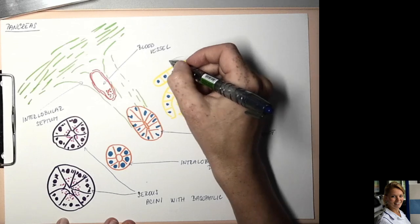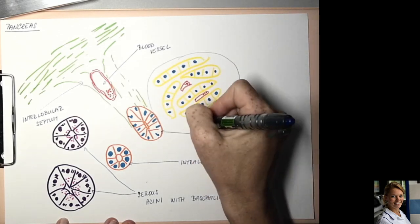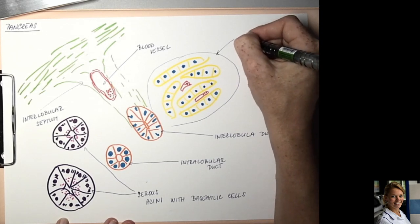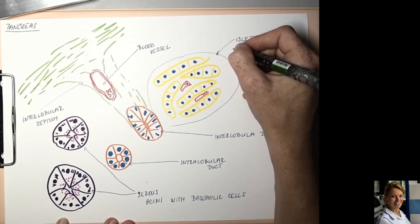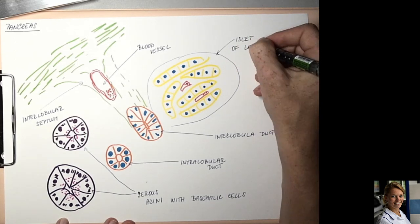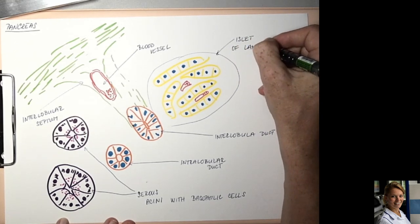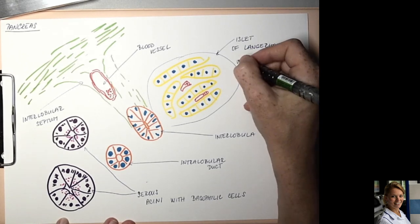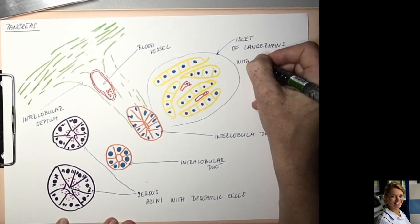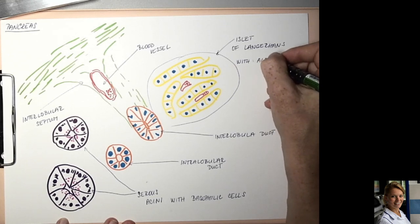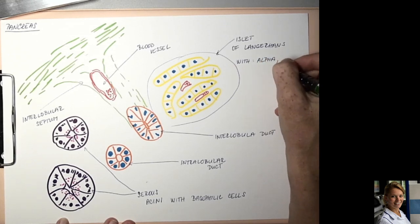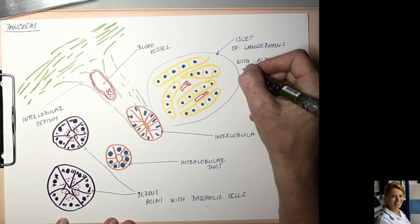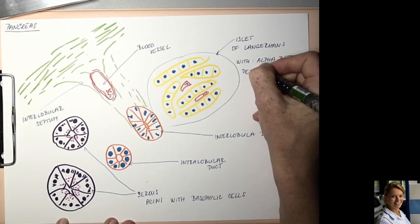And here is an islet with alpha, beta and delta cells.